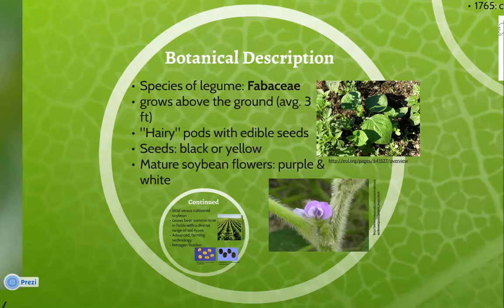However, the colors of soybean plant parts do differ across different species. Mature soybean flowers are most commonly purple and white.